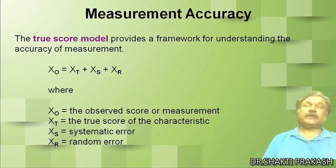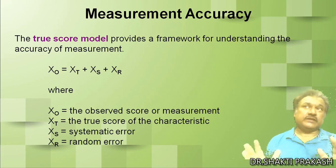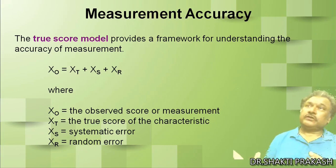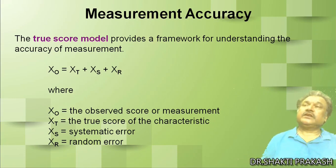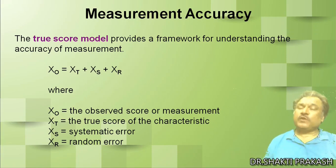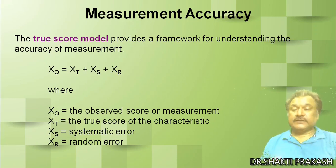Measurement of accuracy — how will you measure accurately? Your scales should be accurate, whatever you have decided in your objectives, and you have constructed your questions on the basis of your objectives. You will develop some scales like Likert scale, semantic differential scale, or staple scale — whatever scale you are going to use. That scale should give you the right answers from your respondent. Measurement of accuracy depends upon the true score model, where x0 is the observed score, xt is the true score of characteristics, xs is systematic errors, and xr is random errors.